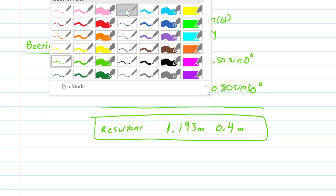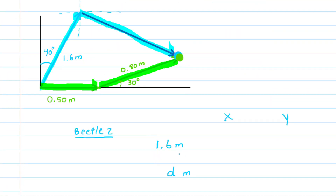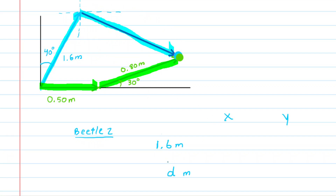For Beetle 2, we know that the distance it traveled on the first part of its journey was 1.6 meters. But we do not know the distance it traveled for the second part of its journey — that vector's distance. We don't have that, so for now we've called that d to represent that distance.